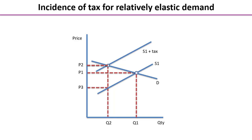On the screen we are going to look at the incidence of tax when we have relatively price elastic demand, so we have a fairly shallow demand curve. Just as a reminder, remind yourself of the area on that diagram that would represent the tax revenue — have a little think — and hopefully you identified the area I have now highlighted on the screen: that blue rectangle represents the total tax revenue.